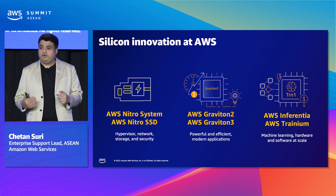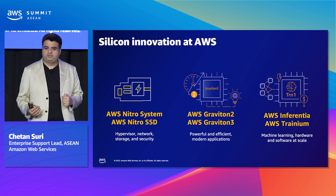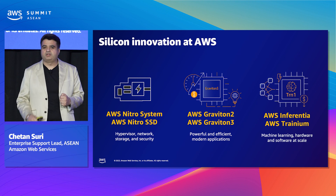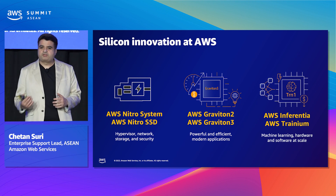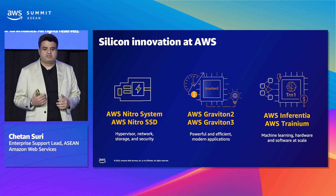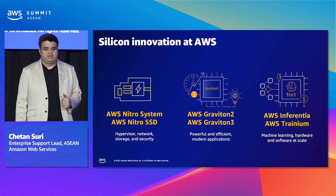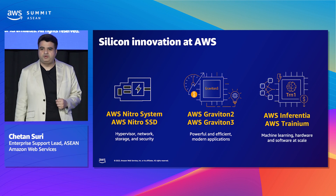Graviton 2 offers 40% better price performance compared to other fifth-generation EC2 instances. And Graviton 3, the latest in the AWS Graviton processor family, provides up to 25% better compute performance compared to Graviton 2.